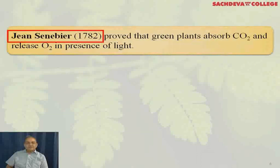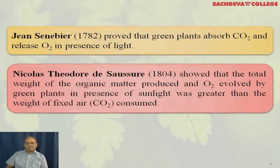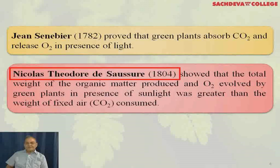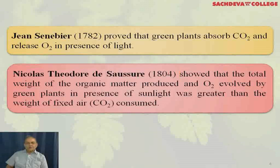Jean Ingenhousz, in 1782, proved that green plants absorb CO2 and release oxygen in the presence of light. Nicholas Theodore, in 1884, showed that the total weight of organic matter produced and O2 evolved by green plants in the presence of sunlight was greater than the weight of fixed air — that is, CO2 — consumed.